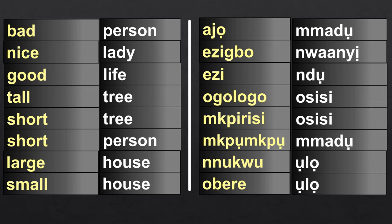Now, let's look at the cases where the adjective precedes the noun. Bad person: Ajo madu. Person is madu. So, bad in this case is ajo. Bad person: Ajo madu. So here the adjective precedes the noun. Earlier we said bad person is madu ojo, but here the adjective precedes the noun: Ajo madu.